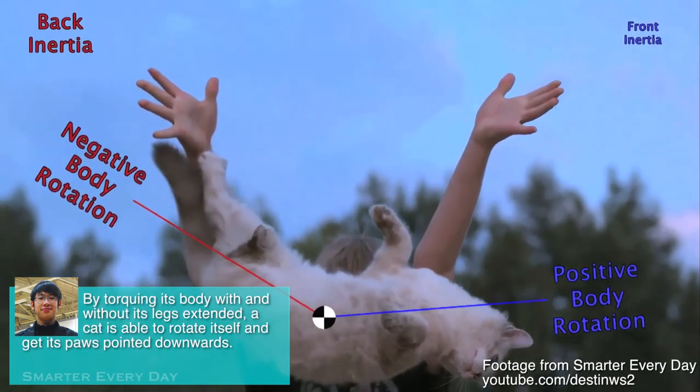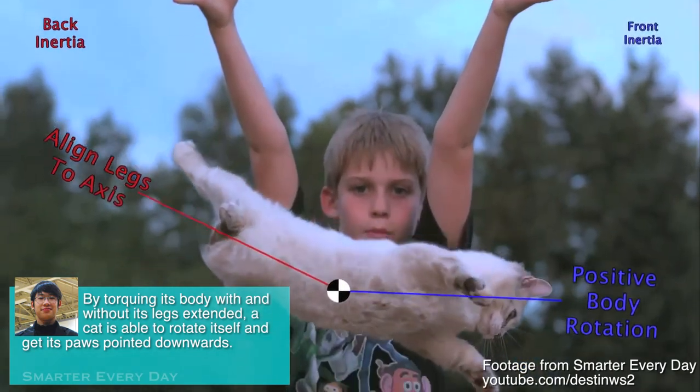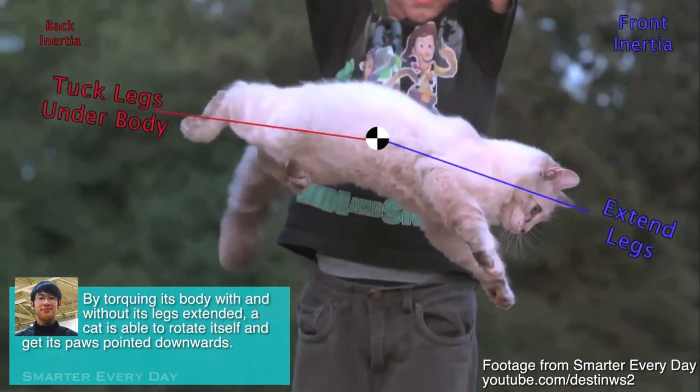By torquing its body with and without its legs extended, a cat is able to rotate itself and get its paws pointed downwards.